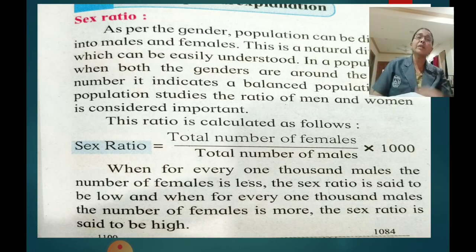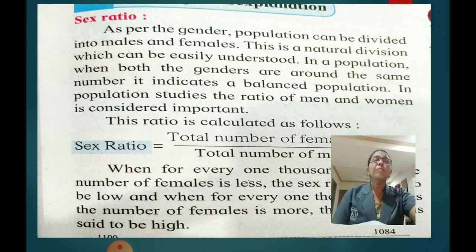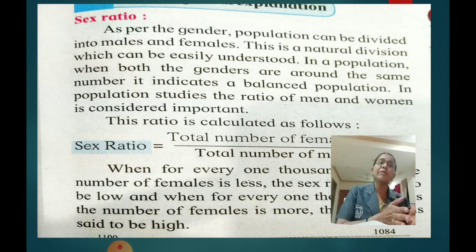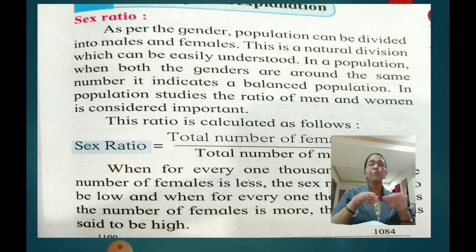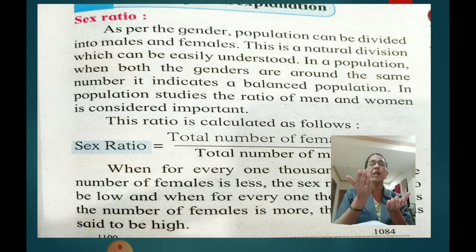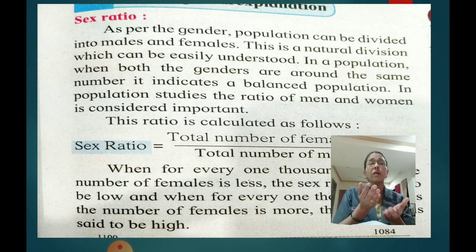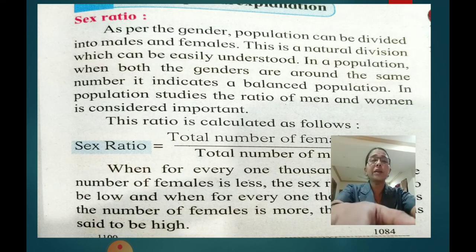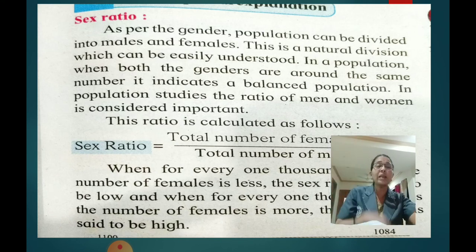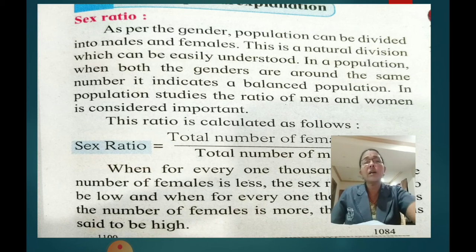Next is sex ratio. Sex ratio means the number of males and females. As per gender, the population is divided into males and females — this is a natural division. If the number of males and females are equal, the population is balanced. If the numbers vary — if males are more and females are less — it will be very difficult for marriage purposes and there will be a lot of gender inequality. There is a formula: sex ratio = total number of females divided by total number of males, multiplied by 1000.